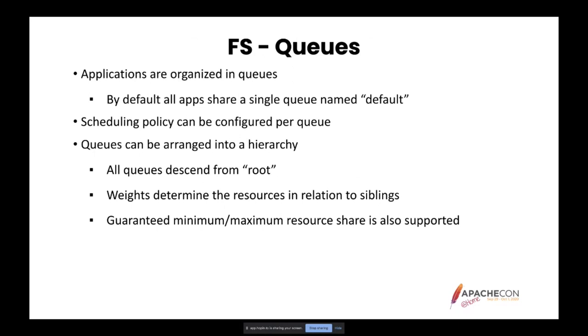Weights are used to determine the amount of resources that a queue should get in relation to its siblings. For example, if a queue called A has a weight of 2 and its only sibling B has a weight of 1, then in the long run with constant load on both queues, A will get twice as many resources as B.